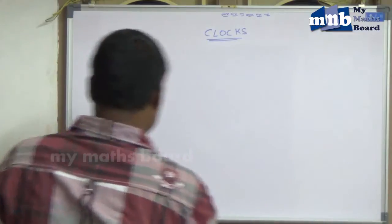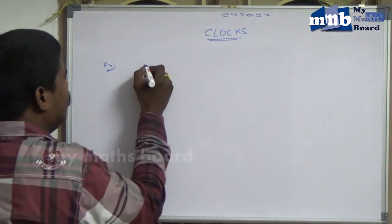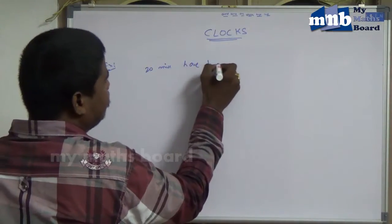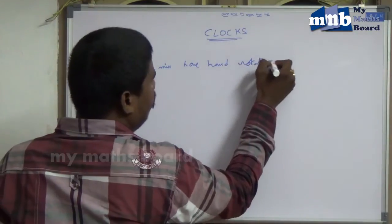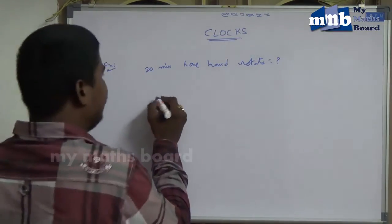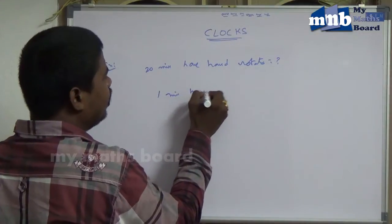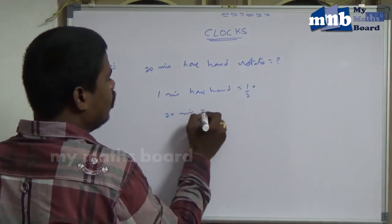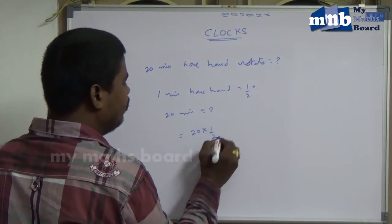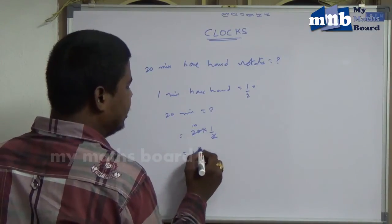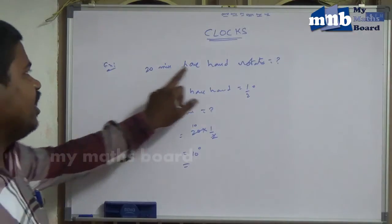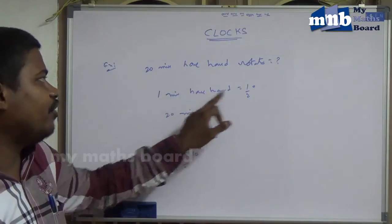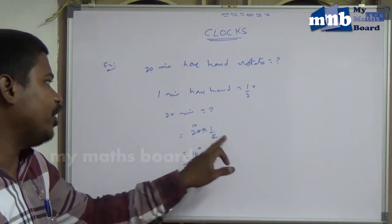Let us take some examples. First example: in 20 minutes, how much does the hour hand rotate? Generally, in one minute the hour hand rotates half a degree. So for 20 minutes, that is 20 multiplied by half a degree, which equals 10 degrees. That is the answer — in 20 minutes, the hour hand rotates 10 degrees.